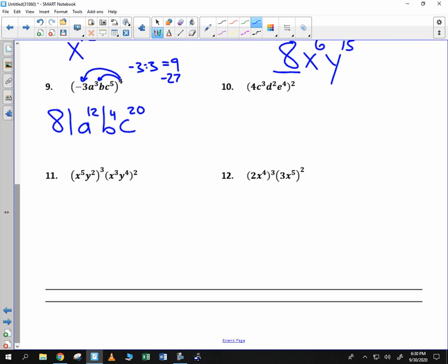Now one last example I'd like to do for you is number 12 before we go to the back side. Here we have to cube this piece. 2 cubed is 8, x to the 12th. We have to square this piece, so we get 9x to the tenth. But now we have another operation. We multiply 8 times 9 is 72, and because we are multiplying, we will add those exponents, x to the 22nd power.